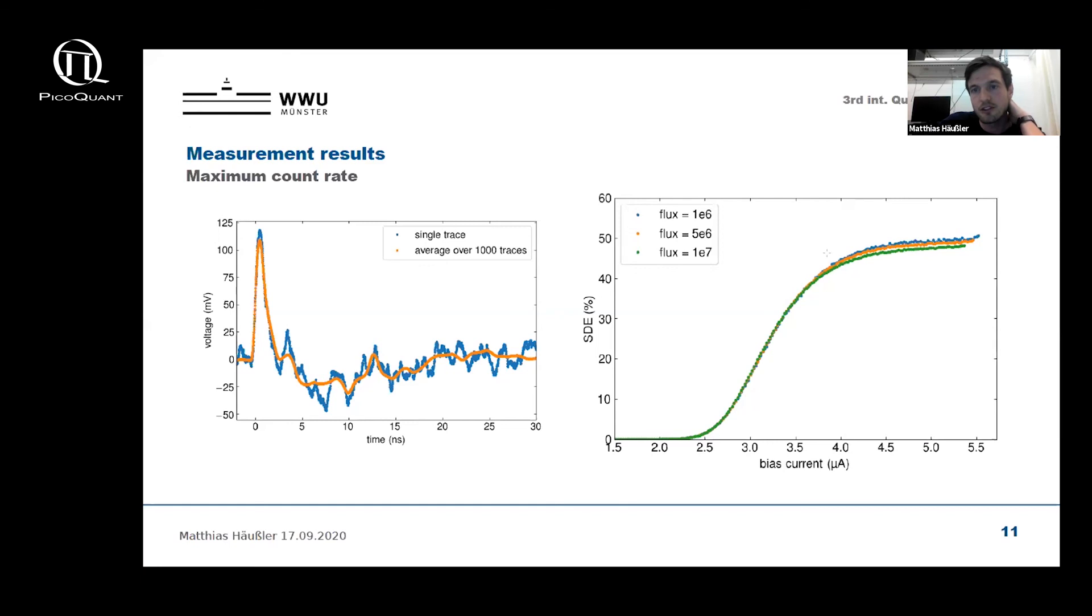If the average photon flux onto the detector is increased from one to ten megahertz, we find a slight reduction in detection efficiency with a final value still at 46 percent.